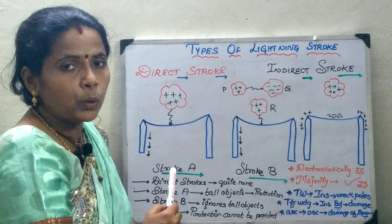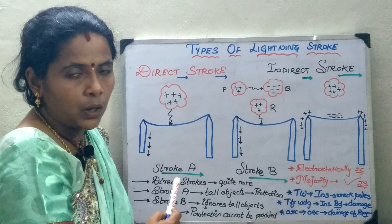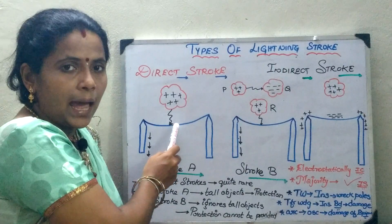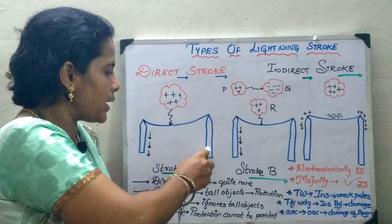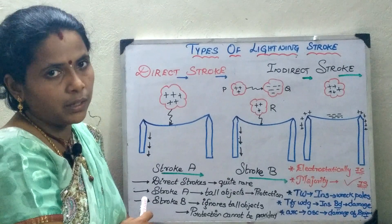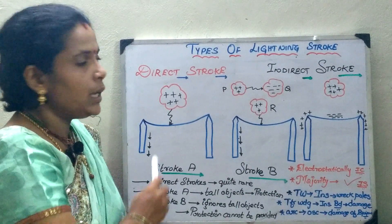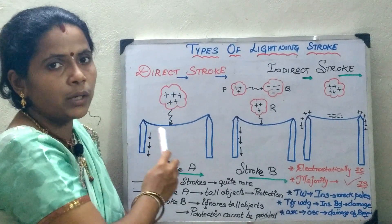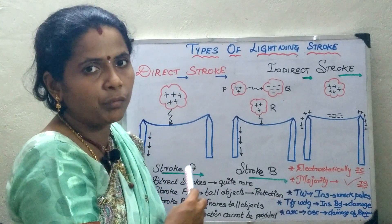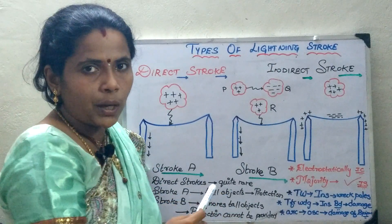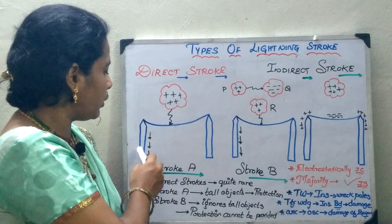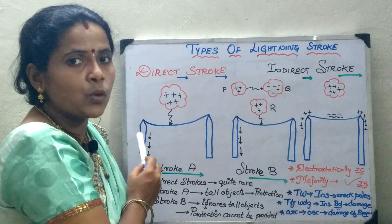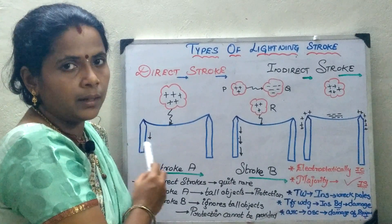Whenever there is a positively charged cloud, it is going to discharge the opposite charge. As a result, these charges are going to pass through the ground immediately. Whenever the potential difference between the overhead line and the cloud exceeds the breakdown potential of the air, the lightning occurs and the charges get drained to the ground.